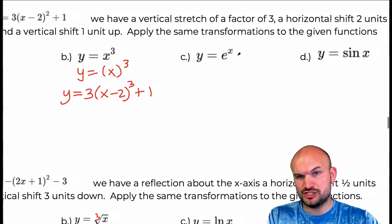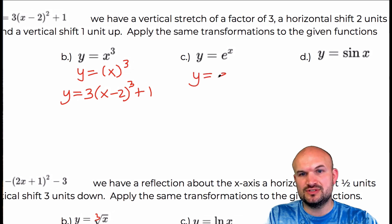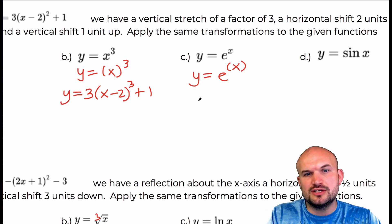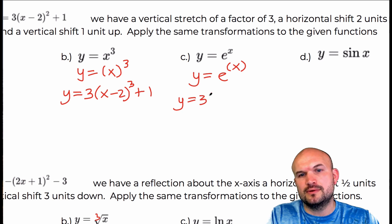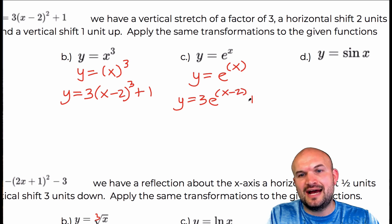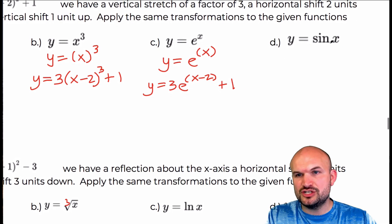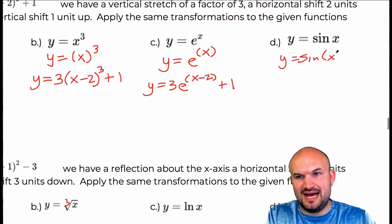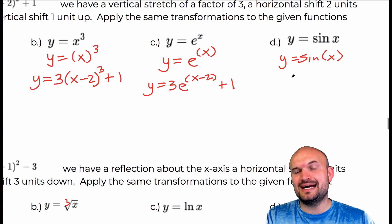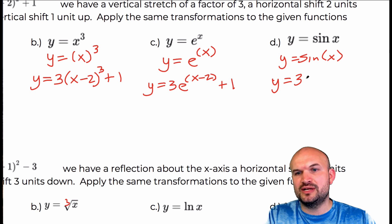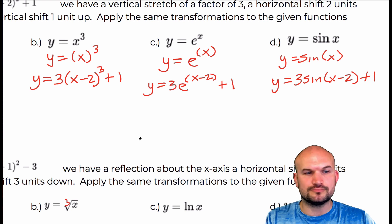For e to the x, the inside of the function is the power. We write y equals e to the power, then multiply by three on the outside, subtract two inside, and add one outside. For the sine function, the inside is the sine of x, so x is inside. Rewriting with transformations: y equals three times the sine of (x minus two) plus one.